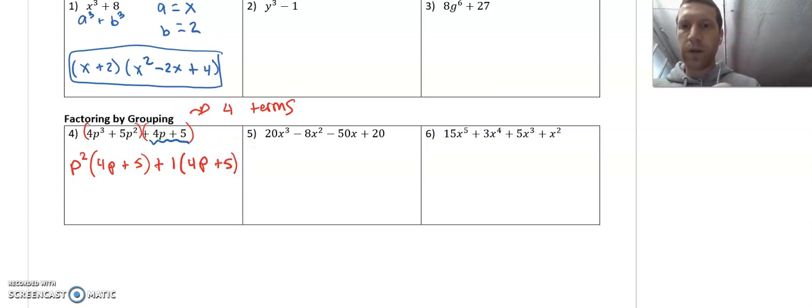So from this point, I have two terms. My first one is p squared times 4p plus 5, my second one is 1 times 4p plus 5. And I have a common factor there, right? This 4p plus 5, while it's a little bit lengthy, it is a common factor. So let's pull that out front.